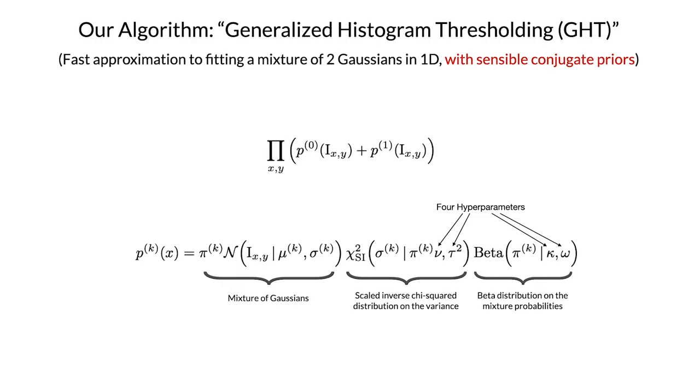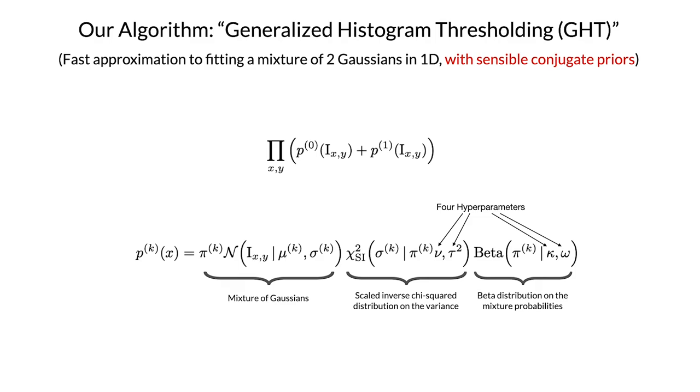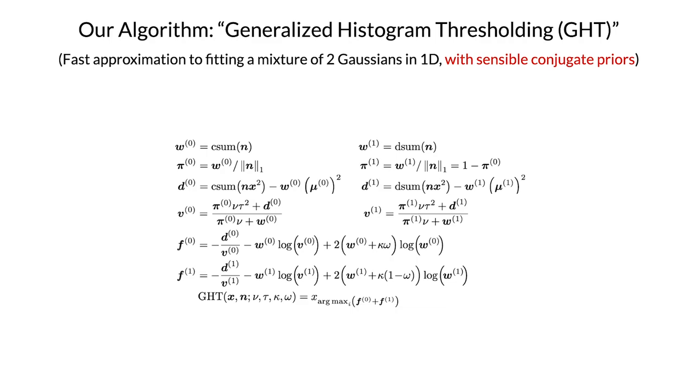In practice, the four parameters of those priors end up just being tunable hyperparameters for this algorithm. Using Jensen's inequality and the tricks I described earlier for using integrals to compute means and variances, you can optimize this objective very efficiently using just a single pass over the histogram. This is what the math for that looks like, and here it is written out in Python using NumPy. It's really simple, just 12 lines of code, and if you already have an implementation of Otsu's method or MET, you can modify it into this algorithm with just a couple of changes to a few lines.